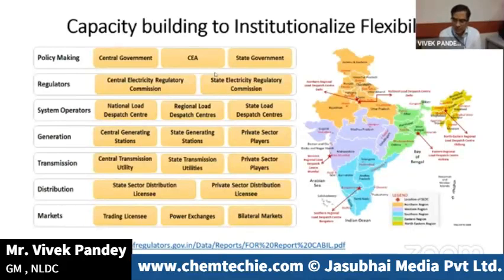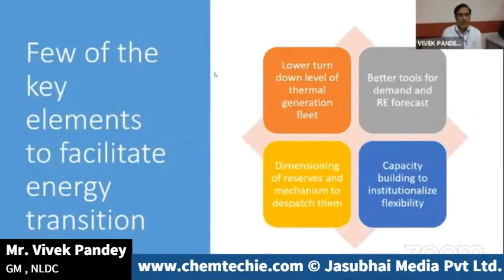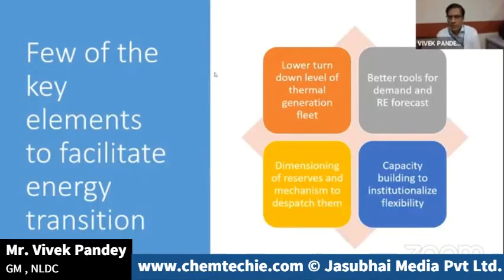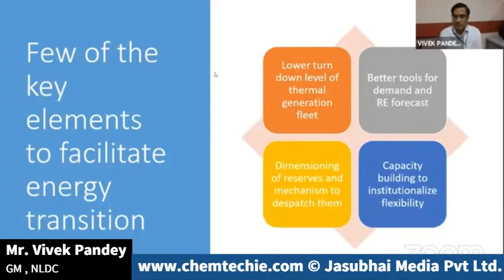As challenges increase, load dispatch centers, statutory bodies, planners, and regulators all need to collaborate to facilitate the transition towards a green grid. The realization that flexibility is key must percolate through all organizations. The transition is certainly very challenging, and the key elements to facilitate it include: lowering turndown levels of the thermal fleet, better tools for demand and renewable forecasting, dimensioning of reserves with a dispatch mechanism, and capacity building to institutionalize flexibility requirements.